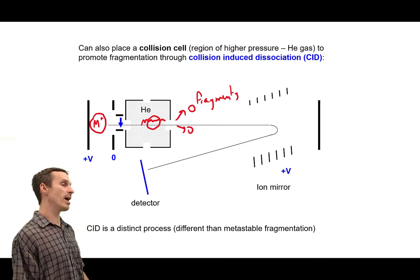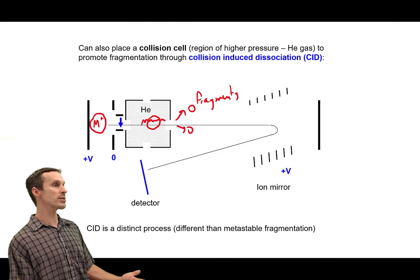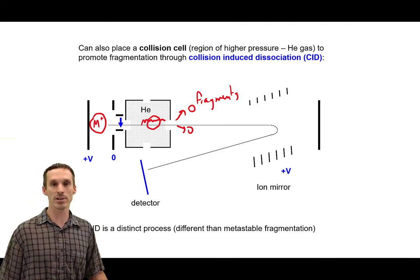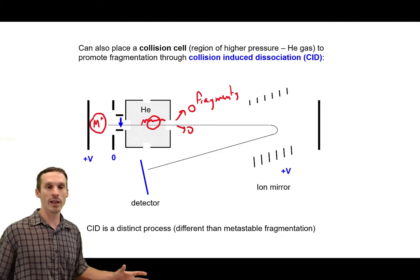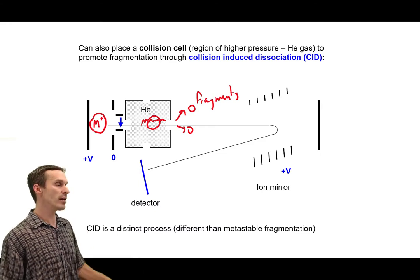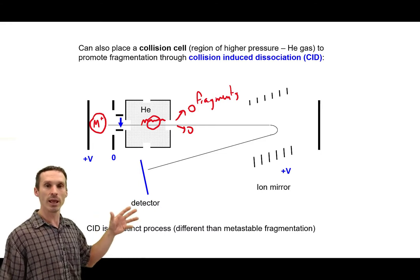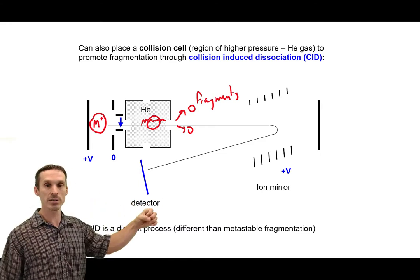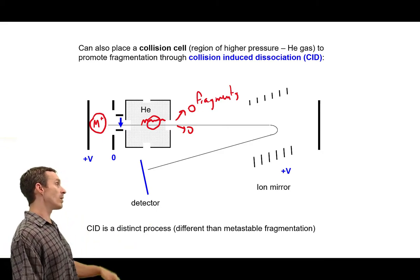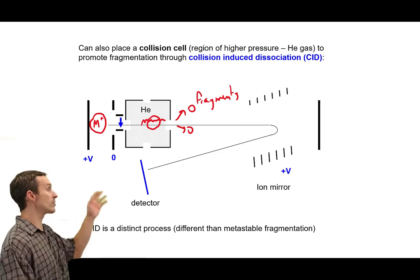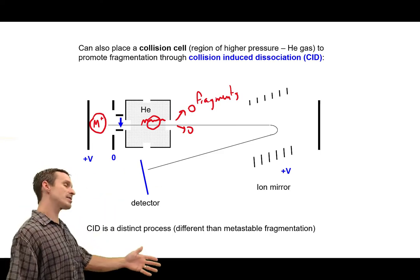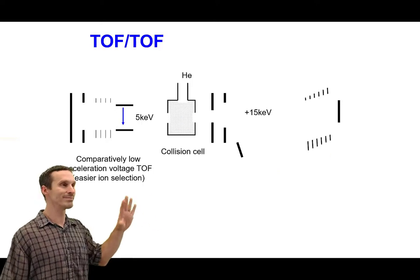Once we've selected that ion we have to break it down. So this process called collision induced dissociation is really nothing simpler than just taking that molecule and banging it into some gas. Usually we have a box within the mass analyzer that has helium gas floating in there. So there's going to be collisions, they're high energy collisions, it's enough that it breaks the molecule down. And once that happens all the pieces have new masses so they're going to fly through with their own rates.